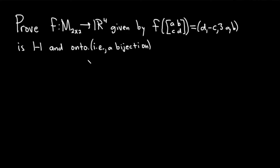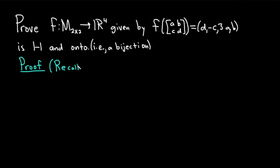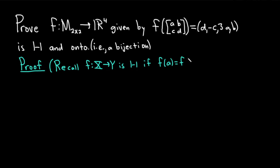Let's first focus on 1 to 1. Whenever I put something in parentheses, it's technically not part of the proof — I'm doing that just for explanation. So recall: what does it mean for a function to be 1 to 1? A function f from capital X into capital Y is 1 to 1, or injective, if whenever you have f(a) = f(b), this implies that a is equal to b.